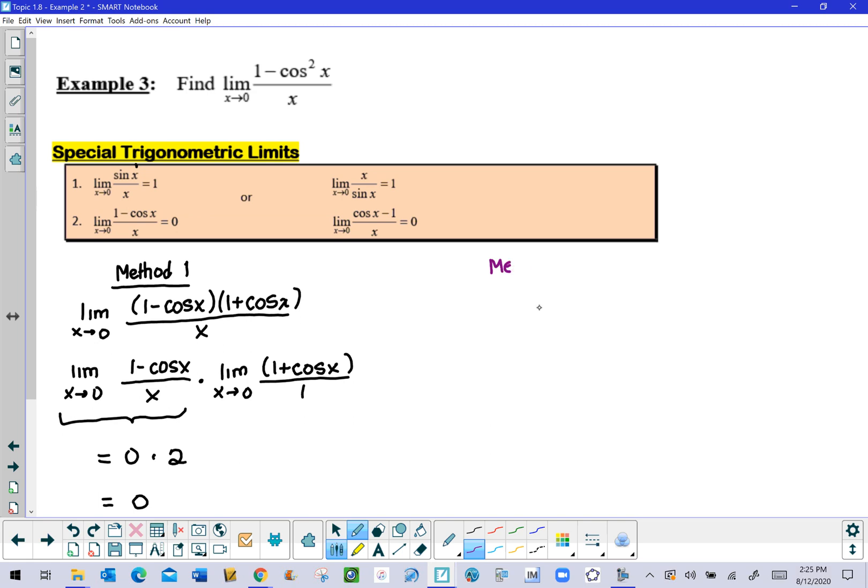Now Method 2 is just a little bit more trig oriented. You don't have this factoring step. For Method 2, we'll look at this 1 - cos²x and we can think about a particular identity from trig class.